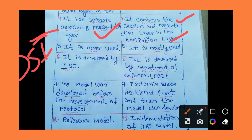The OSI model is never used practically; it is mostly used as a reference. The TCP/IP reference model is practically used. The OSI model was developed by ISO — the International Organization for Standardization. TCP/IP was developed by the Department of Defense (DoD).